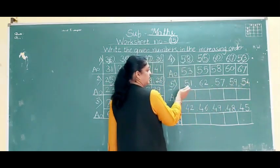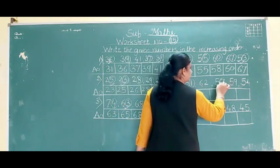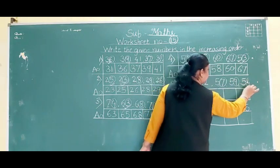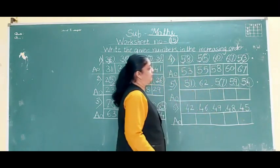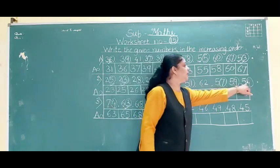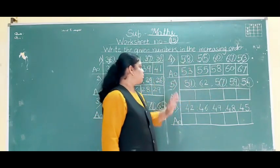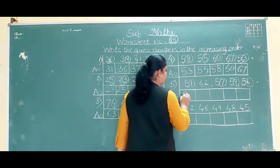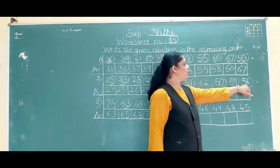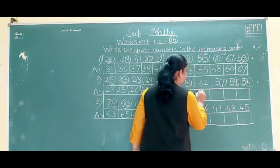For the 5-group, second digits are 1, 7, 9 and 4. Which comes first? 1. So 51 comes first. Then 4, so 54. Then 7 or 9 remain — 7 is above and 9 is below, so 57 is smaller. Then 59.